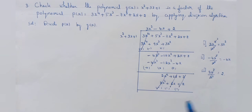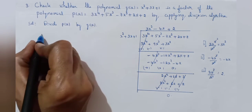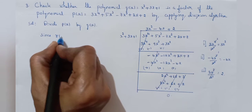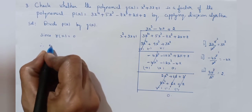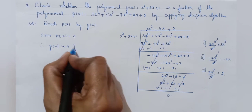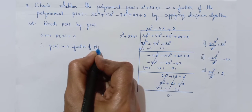The remainder is 0. Since the remainder is 0, therefore g of x is a factor of p of x. Since r of x is equal to 0, therefore g of x is a factor of p of x.